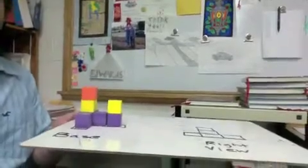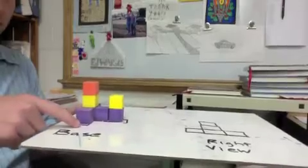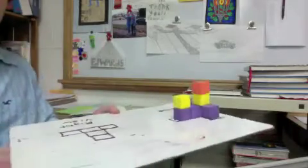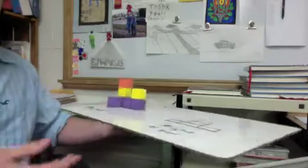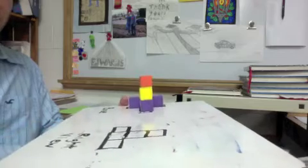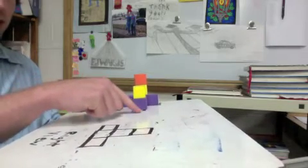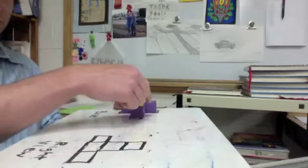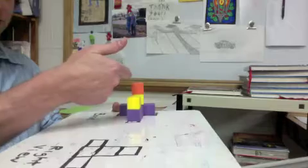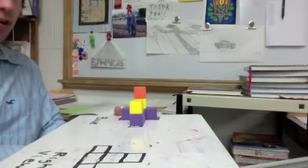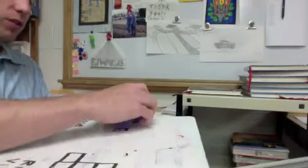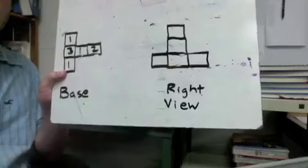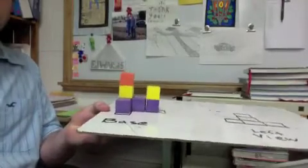Now we're going to do the right view. Turning the building to show the right side — from the right you're seeing one tall here, three tall here (the front column has two but the back one is higher, so you see three), and then one here. So the right view should look like one, three, one.